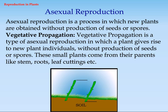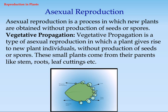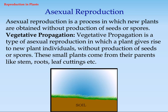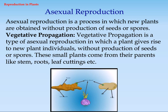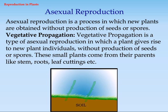Vegetative Propagation. Vegetative propagation is a type of asexual reproduction in which a plant gives rise to new plant individuals without production of seeds or spores. These small plants come from their parents like stem, roots, leaf cuttings, etc.